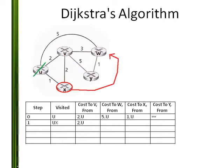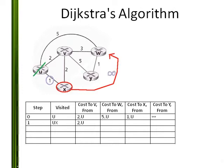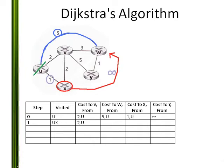Now I consider W, which I have not visited before. To get to W, I must add the old cheapest cost to my node X, which is 1 from U, and the cost to my neighbor W, which is infinity. This gives infinity. Is this less than the previous cost to W, which was 5 from U? No, it is not. Do not update the cost.